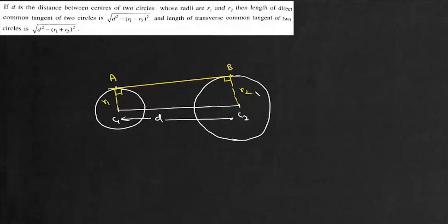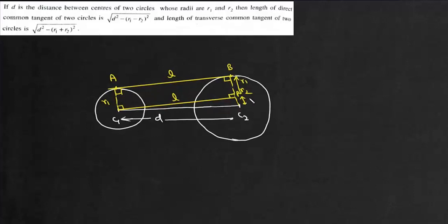From center c1 we will draw a line parallel to AB, and suppose this point is P. Now this angle is 90° and this angle is 90°. So AC1PB is a rectangle. If this length is l, then this is also l; this is r1 and this is also r1. Then this distance PC2 will be r2 minus r1.